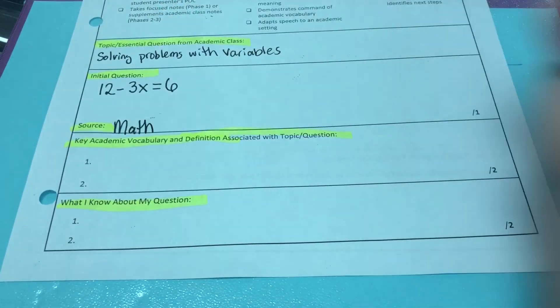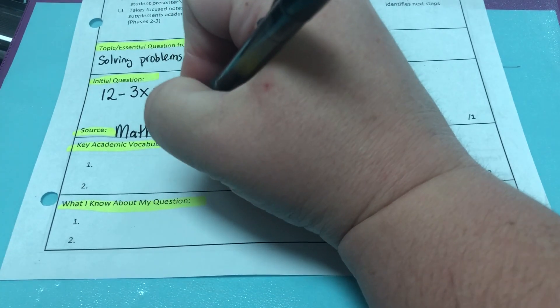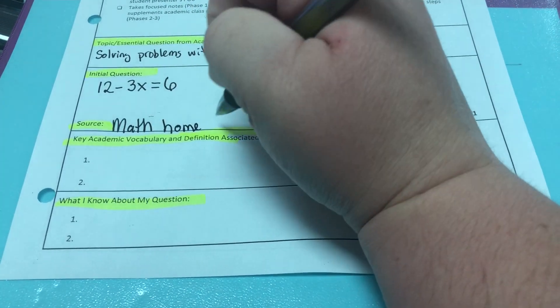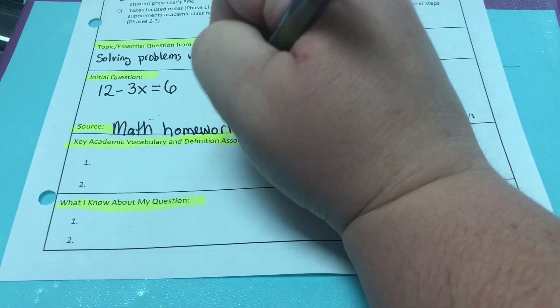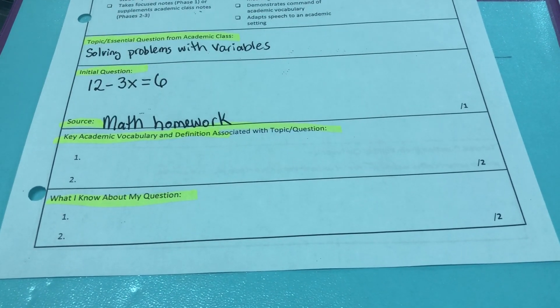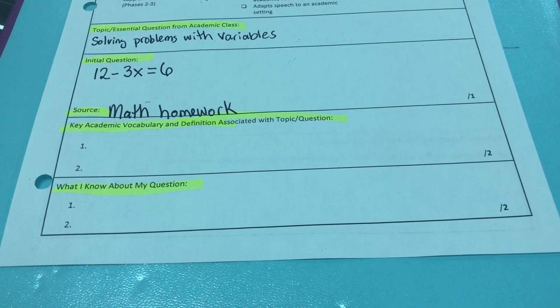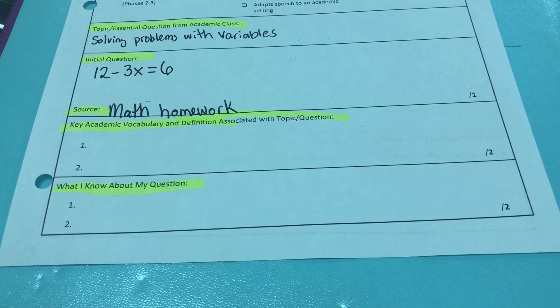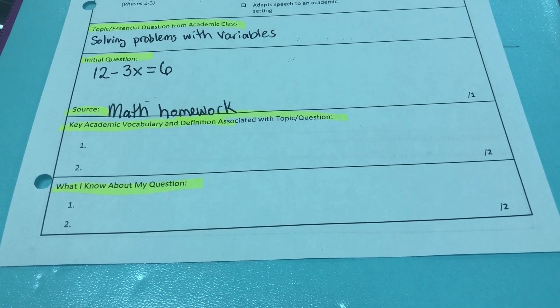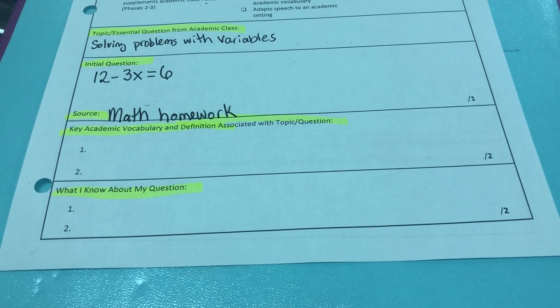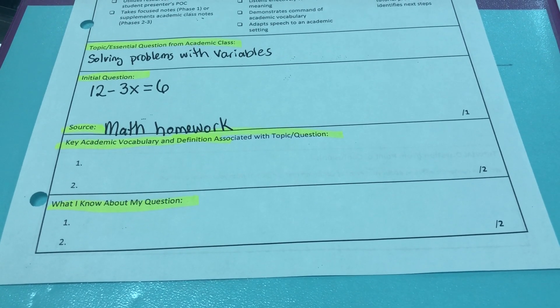I know that some students are doing IXL for math, so you could put IXL. It could be bell work, it could be textbook work. If it's not related to math, maybe it was a science class or something like that, you could do maybe from your notes or from a lecture in class. Wherever you got that question from is where you put as the source.